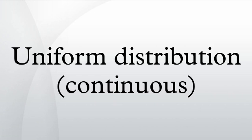The distribution is often abbreviated U(A,B). It is the maximum entropy probability distribution for a random variate X under no constraint other than that it is contained in the distribution's support.